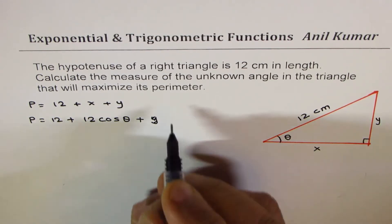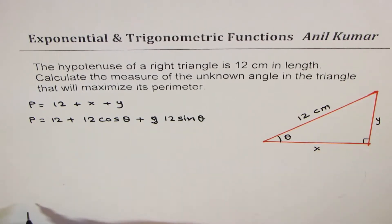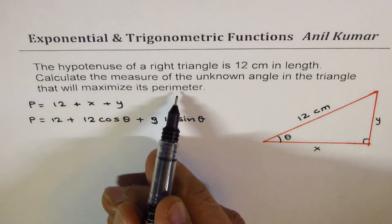Y will be equals to 12 sine of theta, right? So we'll replace that by 12 sin θ.